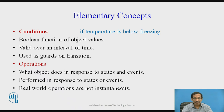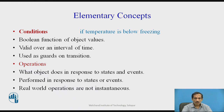Conditions can also be put into our dynamic model. A condition like if temperature is below a freezing point is a boolean function of the object values. It is valid for an interval of time and is used as guards on a particular transition. We can also use operations in our dynamic model, such as what an object does in response to states and events — what is performed in response to a state or event occurrence, and what real-world operations are not instantaneous in nature.